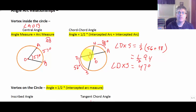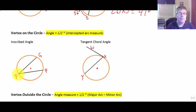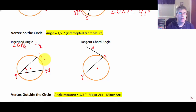So angle DXS equals 47 degrees, the vertical angle also equals 47 degrees, and we know the supplement as well. Next, we have the vertex on the circle. If the vertex is on the circle, we can have two different angles. Angle GPQ would be an inscribed angle, and the angle equals one half of its intercepted arc. So if the arc is 42 degrees, then angle P equals 21 degrees.